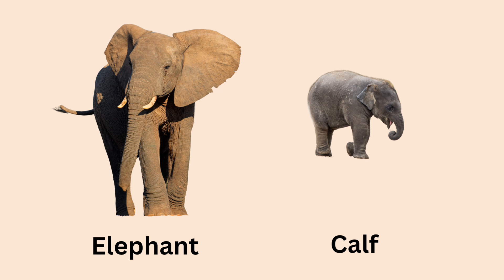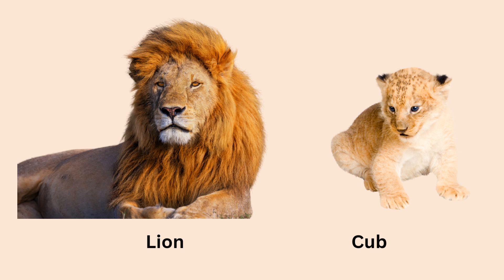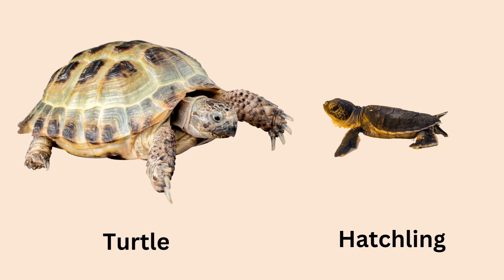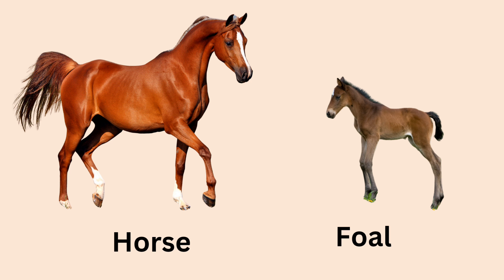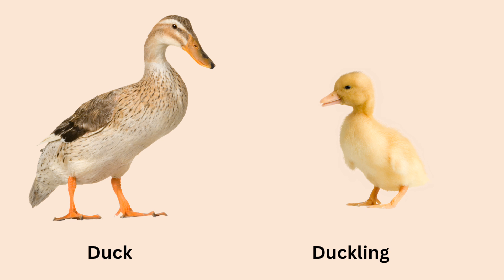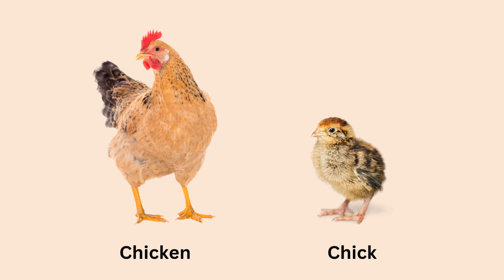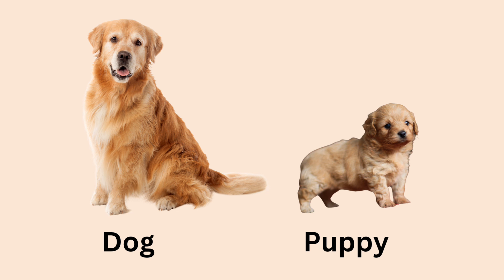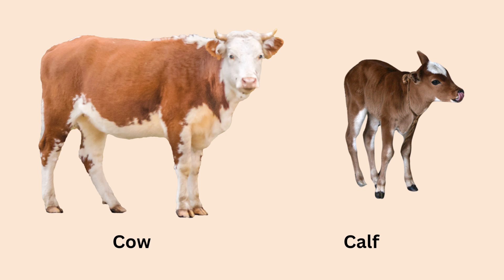Do you know these young animals have their special names? Let's learn some of them together. A young elephant is called a calf. A young lion is called a cub. A young turtle is called a hatchling. A young horse is called a foal. A young duck is called a duckling. A young chicken is called a chick.